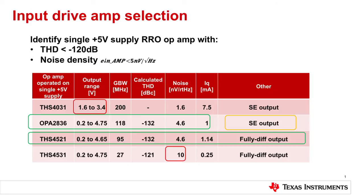Moving on to the OPA2836 — it fits the bill almost, except it's a single-ended output, so not quite. Moving on to the THS4521: operating voltage fits, gain bandwidth is plenty enough, calculated THD fits, noise is right on the money, and the output is fully differential. Since the ADS8881 is also fully differential input, that tags right along — the THS4521 is our choice. The last part, the THS4531, we throw away and move on.